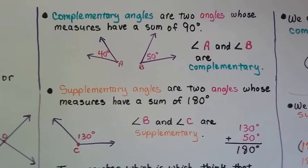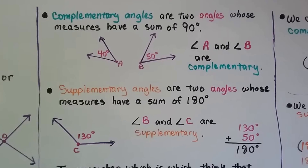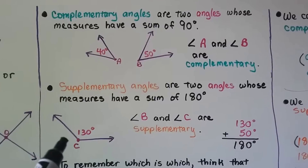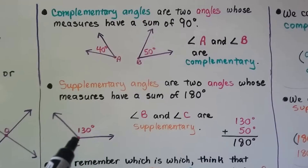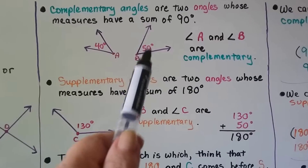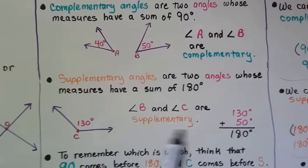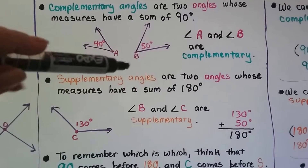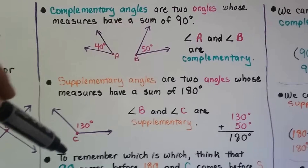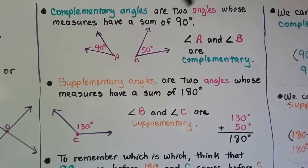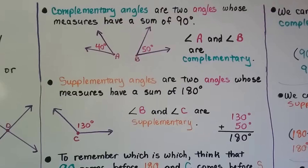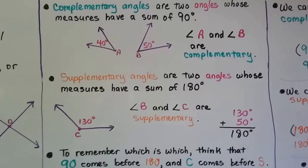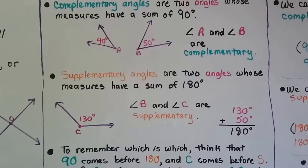Supplementary angles are two angles whose measures have a sum of 180 degrees. If we have angle C, which is 130 degrees, and angle B, which is 50 degrees, together they make 180 degrees, so angle B and angle C are supplementary. Note that complementary and supplementary refer to a pair of two angles — not three, four, or five angles.